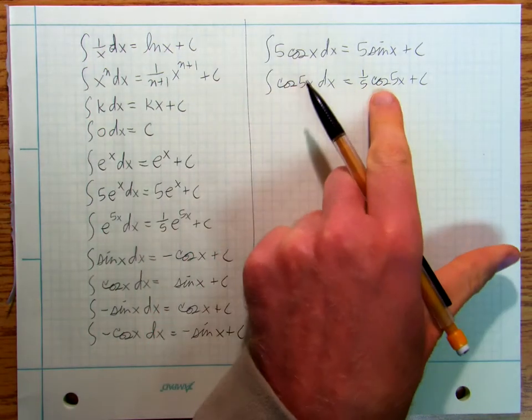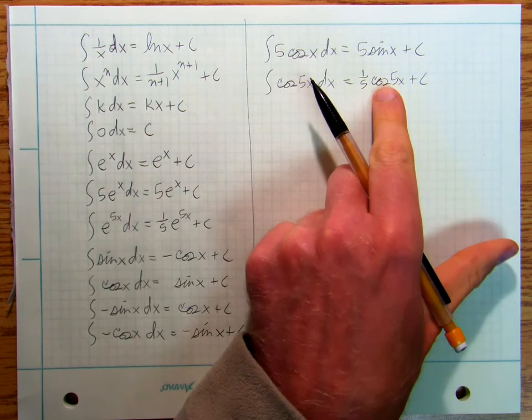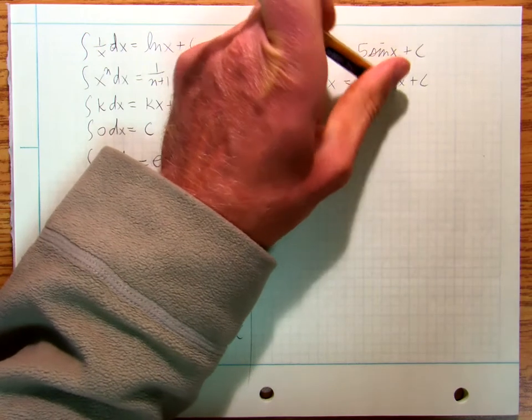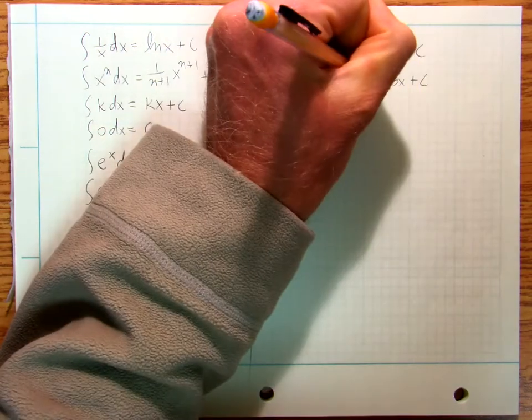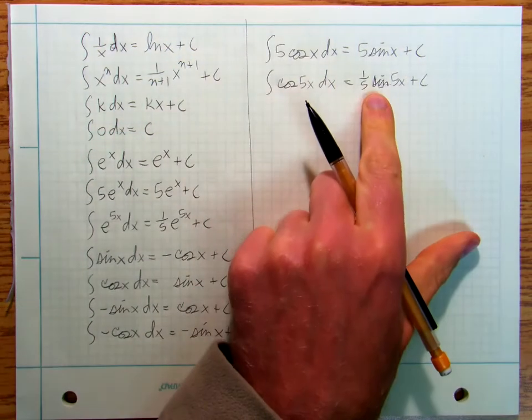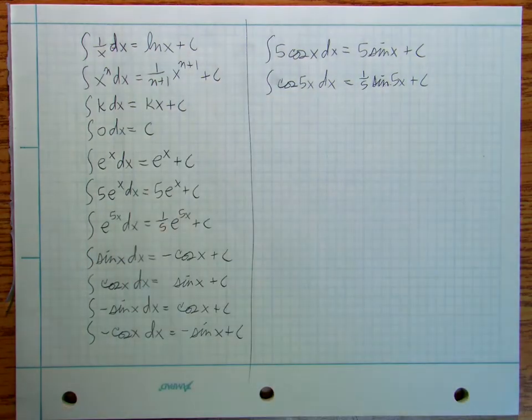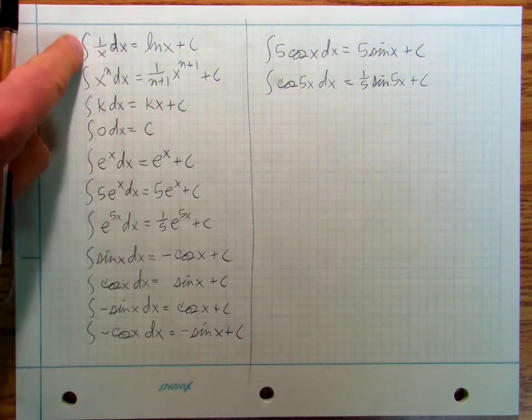So it's going to be 1 fifth sine 5x plus c. A lot of people have trouble with those. So make sure that you're taking the time to verify that the derivative of this... Oh, I'm sorry. That's a sine x. That the derivative of this...